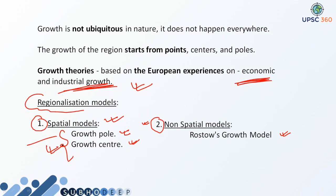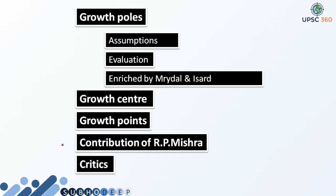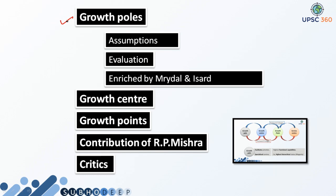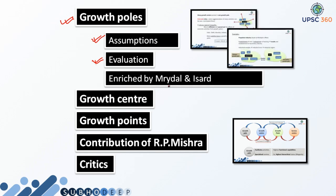In this class, we will be focusing upon these concepts. Let's see what concepts we are going to discuss holistically. The first concept is growth pole — we'll see by whom it was given, the assumptions, and what Francis Perroux actually said about growth poles. We'll do the overall evaluation of his theory, and also see how this theory was further enriched by scholars like Myrdal and others, and what additions they made. Then we'll see the concept of growth center, which was given by Boudeville in 1966, and what he said in his theory.